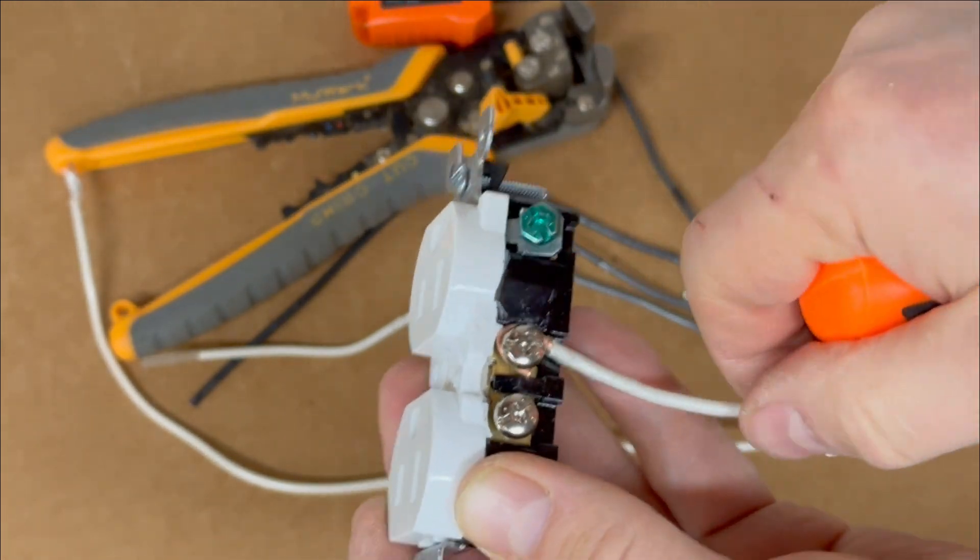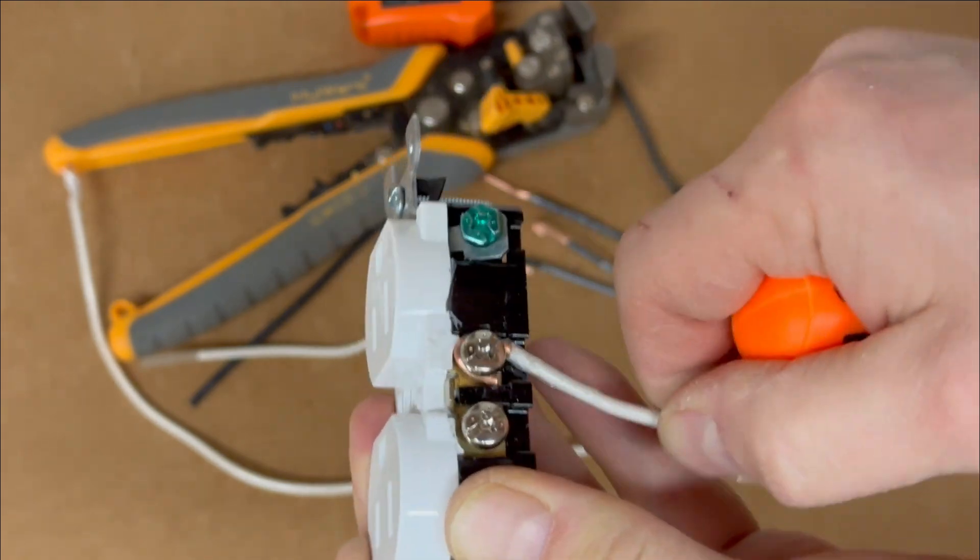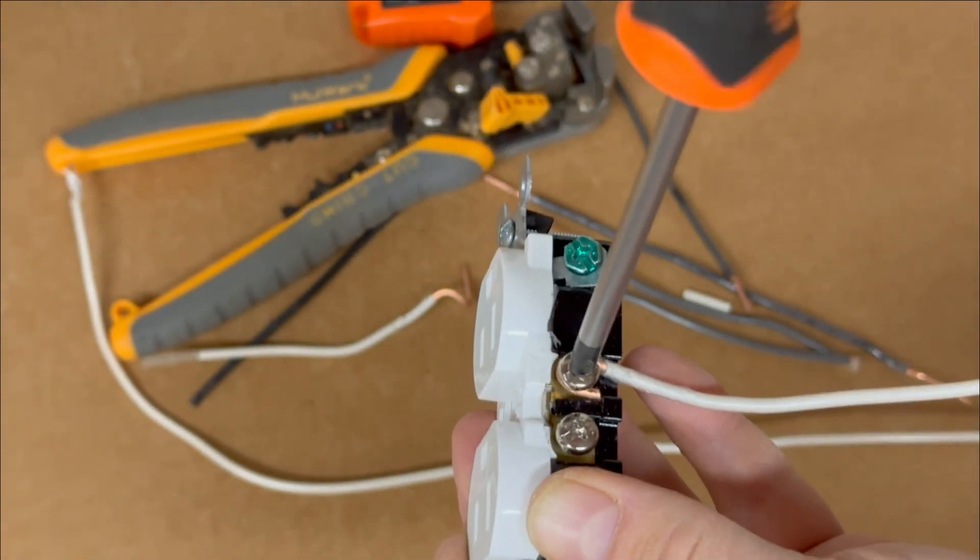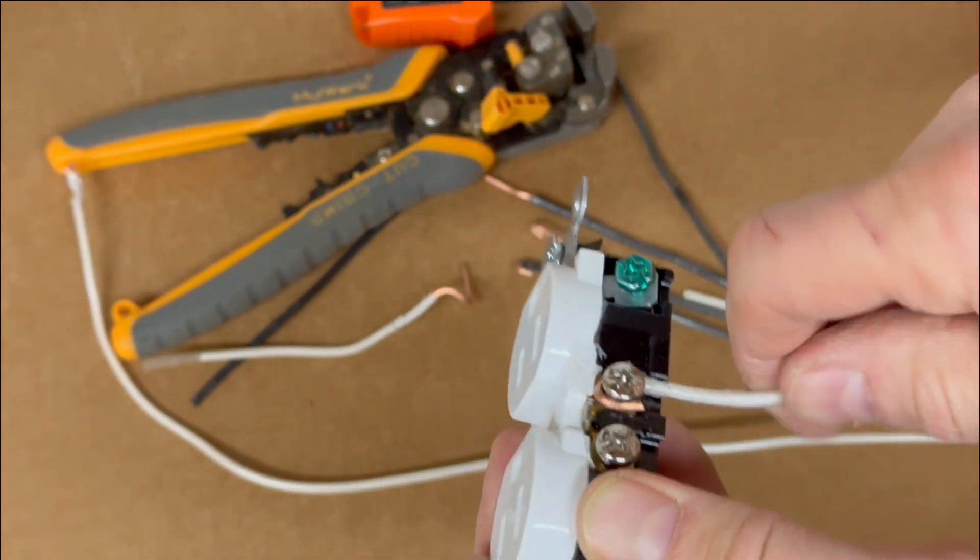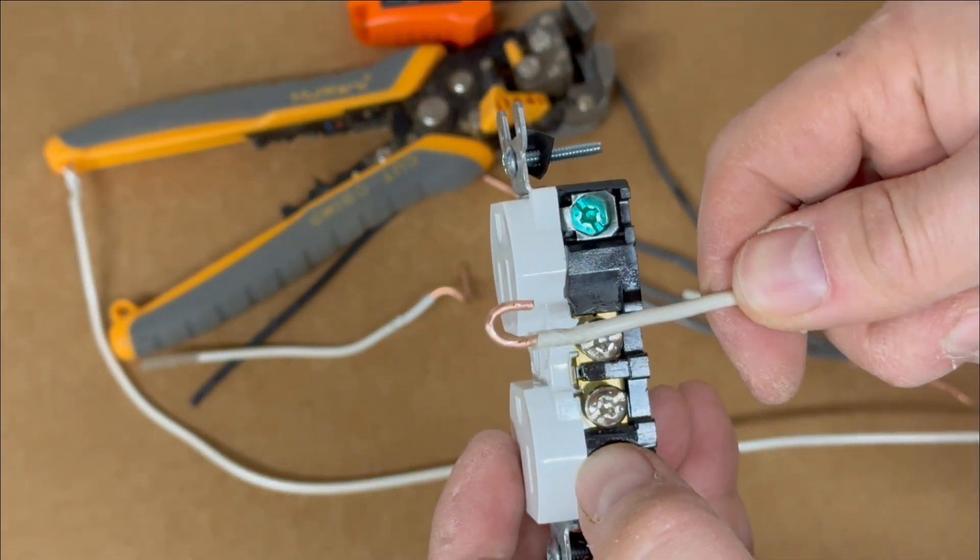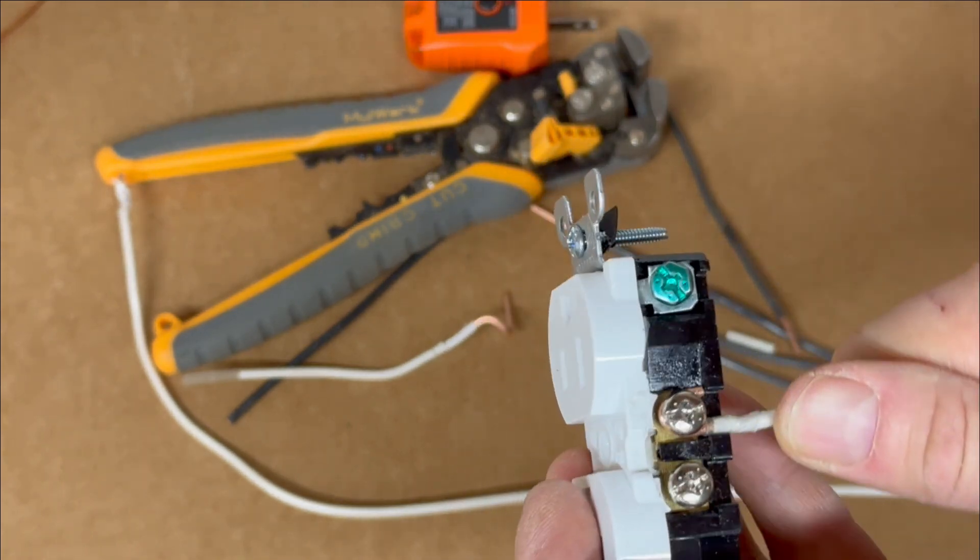When you attach your wiring in a counter-clockwise direction, the wire gets pushed away from the terminal screw. This means it won't be secured tightly in the center of the terminal screw, which could lead to a weaker connection that you don't want.